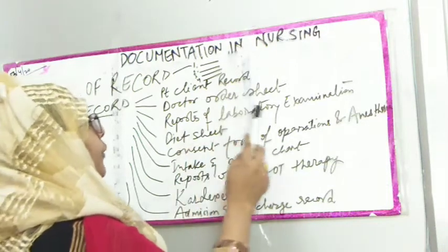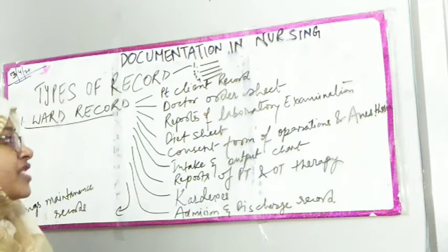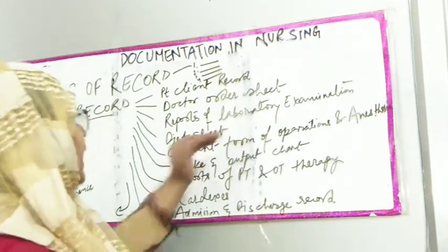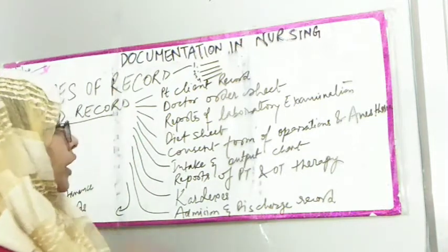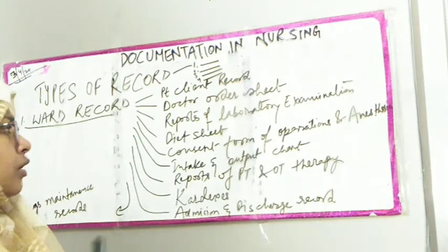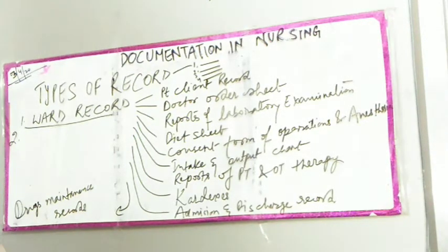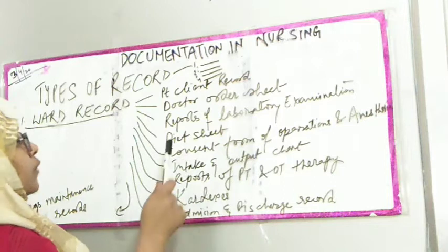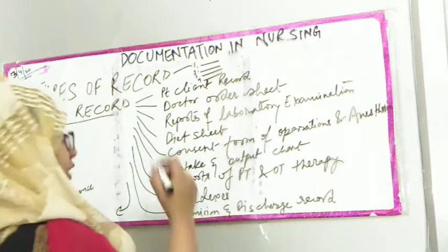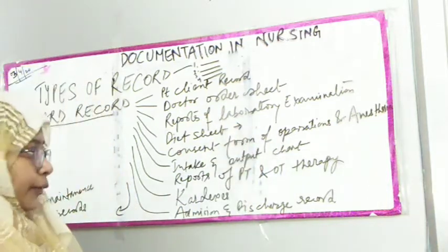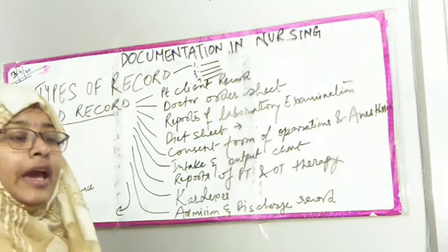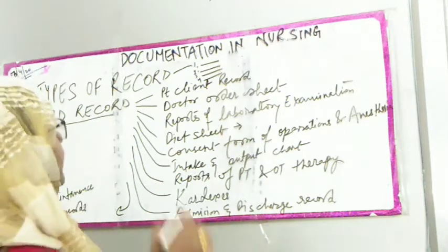Then come reports of laboratory examination — the doctor ordered tests such as pathology, assays, and examinations, and those reports are part of the ward record. Next is the diet sheet, which is prepared by the nutritionist, telling the nurse what to give the patient for breakfast, lunch, dinner, and evening snack. That is the diet sheet.